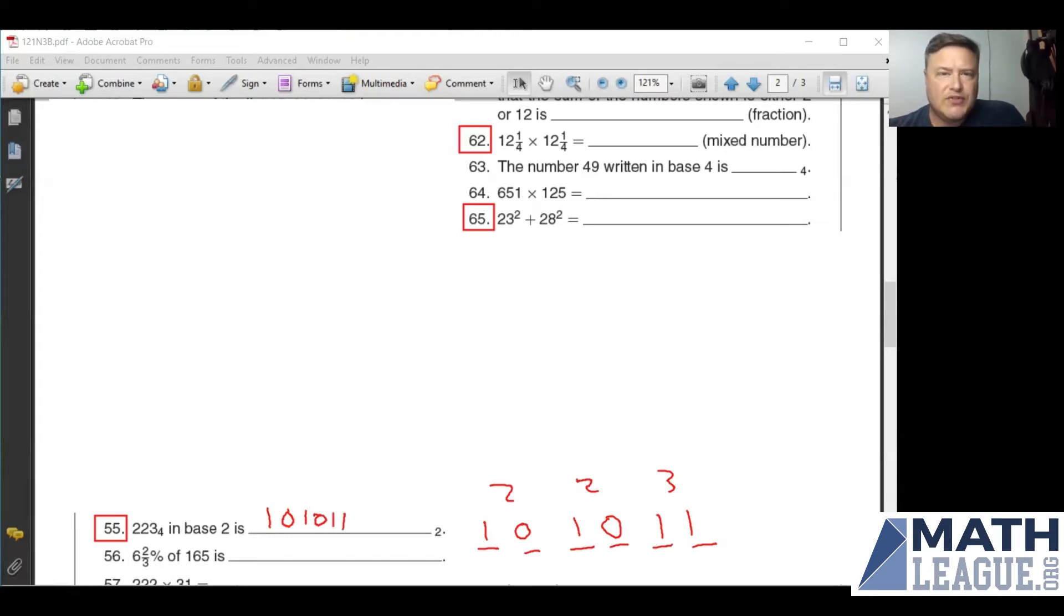All right, let's move up to number 62. So the way I do this is I'm going to use foil. So it's basically 12 and a fourth. So let me actually write it out. 12 plus a fourth times 12 plus a fourth. All right, what does that give us? Well,